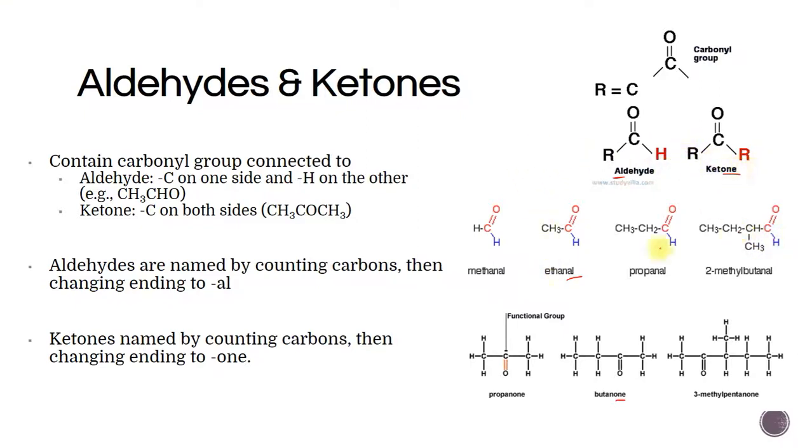Ketones on the other hand are surrounded by carbon, so the ketones always go in the middle. So when you look at just a carbonyl group C double bonded O, if it's on the end, it's an aldehyde. If it's in the middle, it's a ketone.